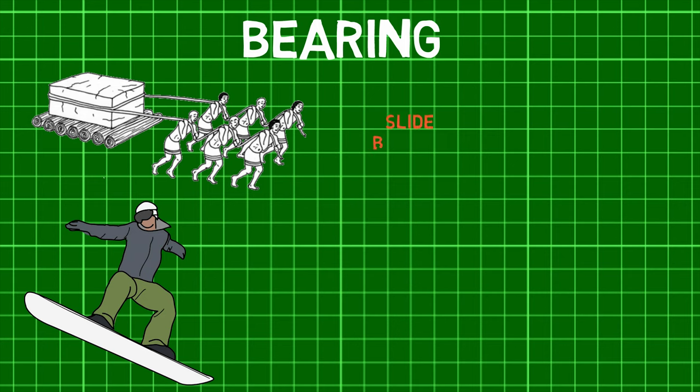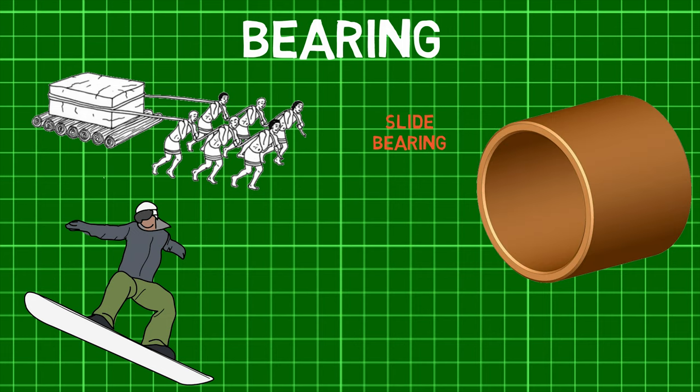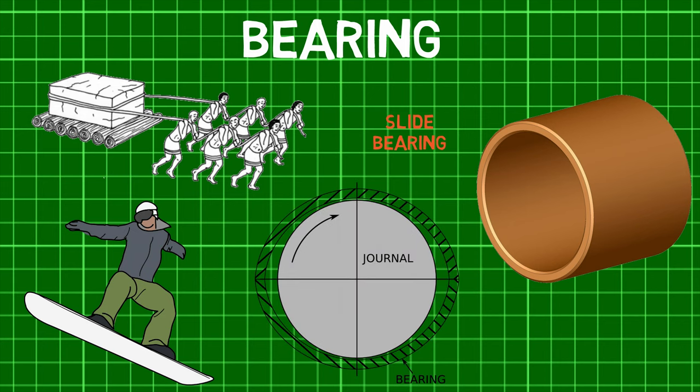A plain bearing is the simplest type of bearing, comprising just a bearing surface and no rolling elements, wherein a journal — which is the part of the shaft in contact with the bearing — slides over the bearing surface. The simplest example of a plain bearing is a shaft rotating in a hole. Plain bearings in general are the least expensive type of bearings; they are also compact and lightweight, and they have a high load-carrying capacity.